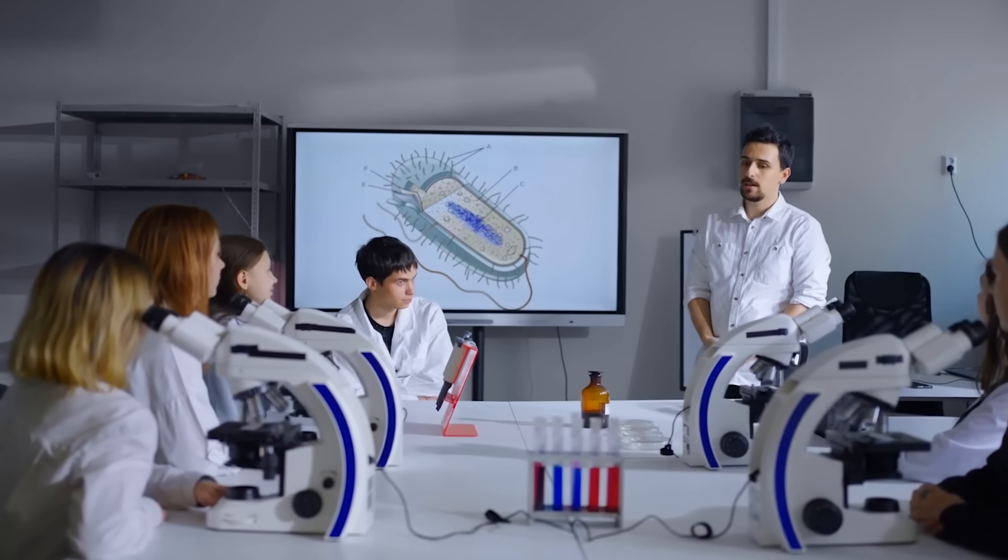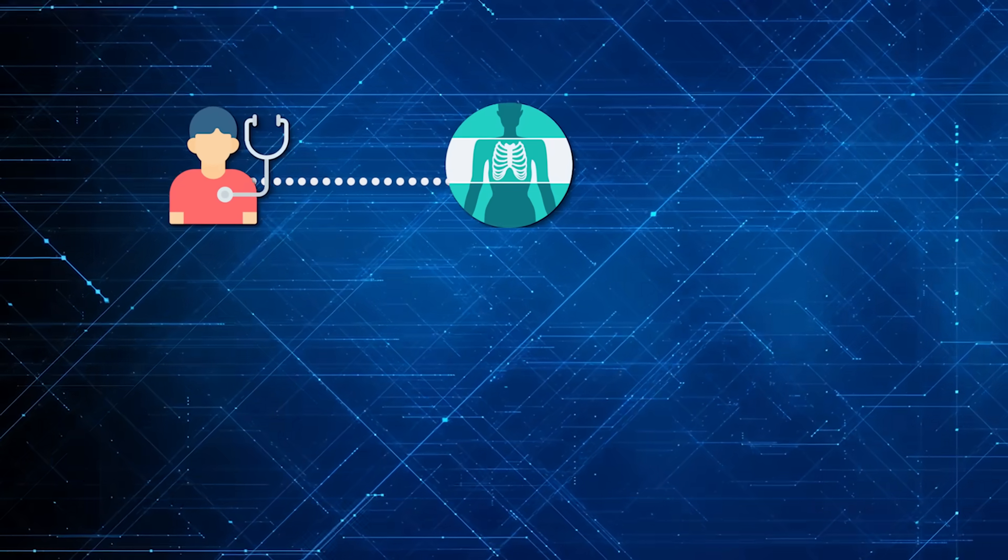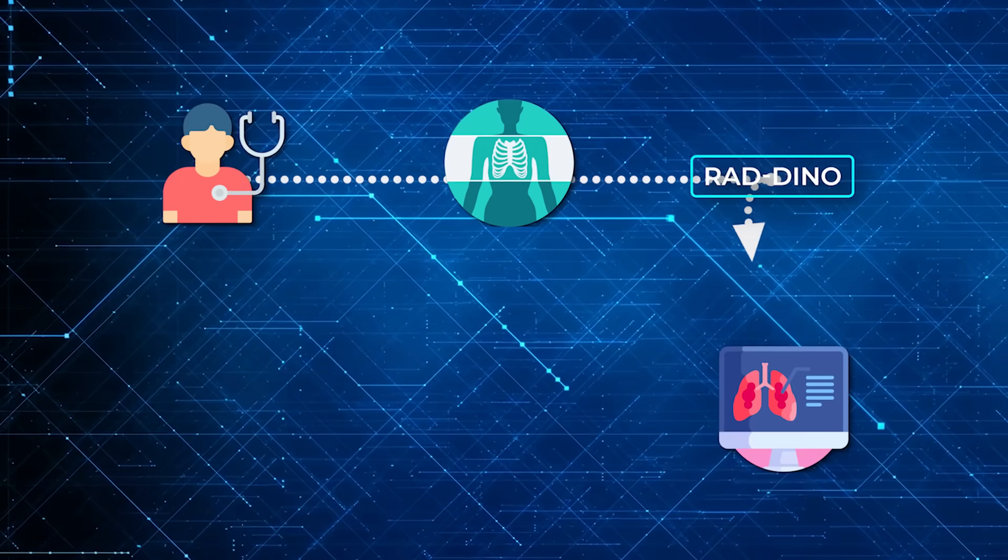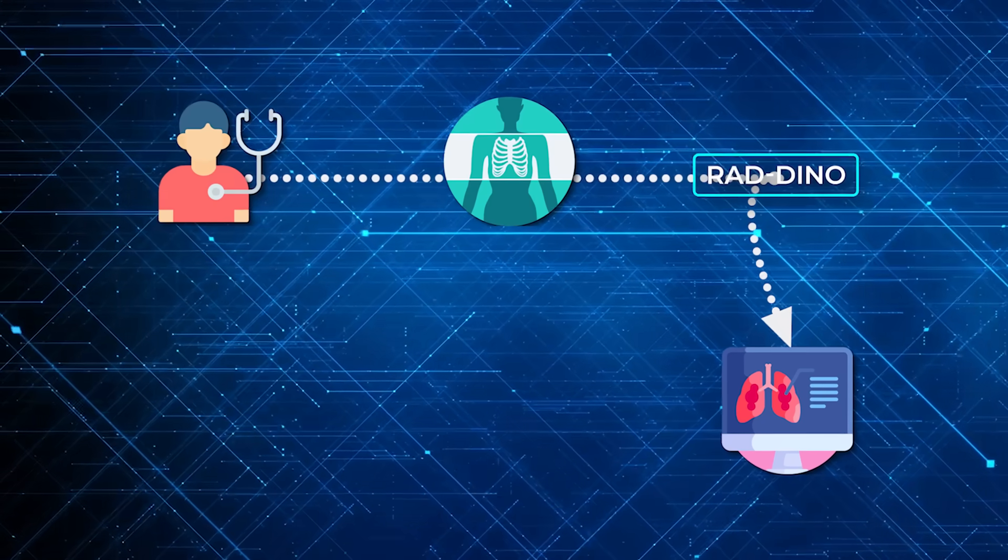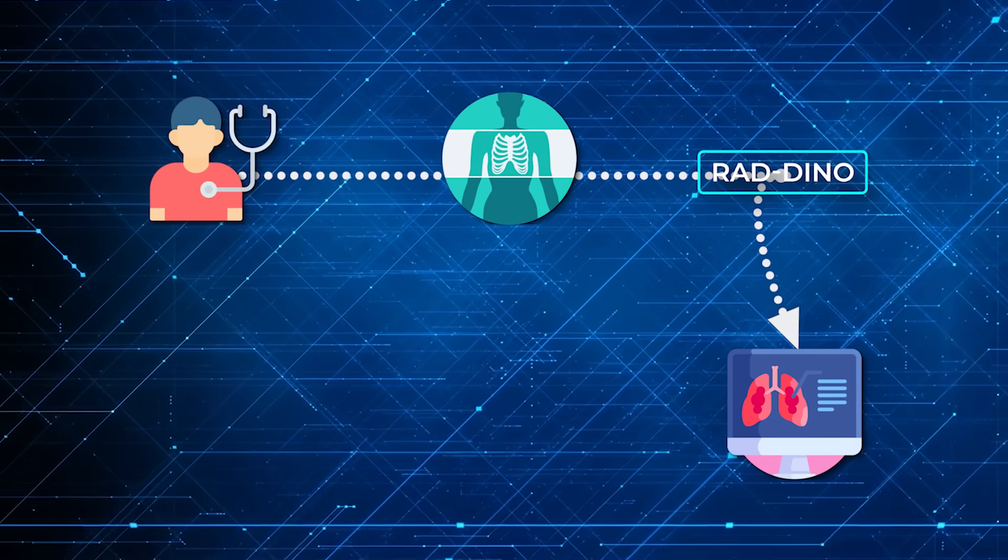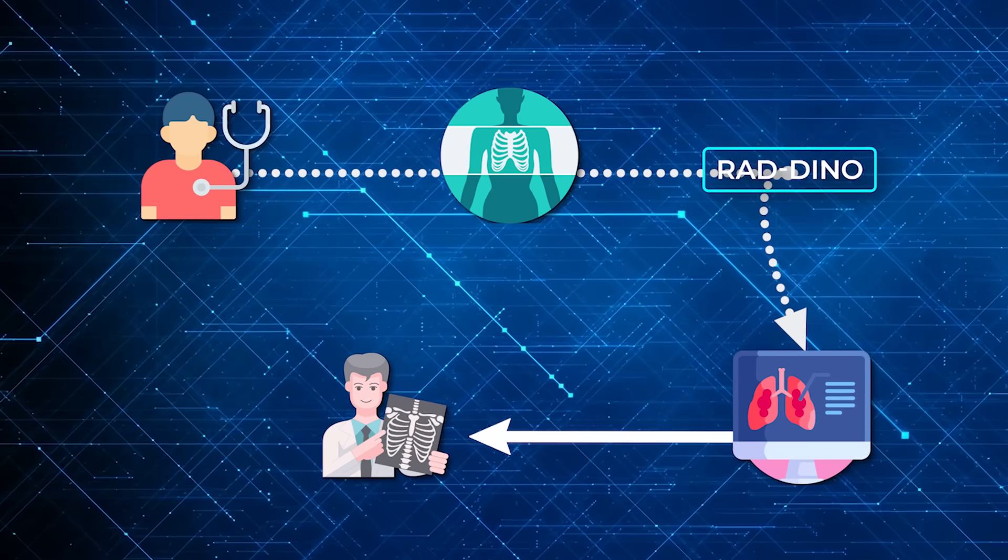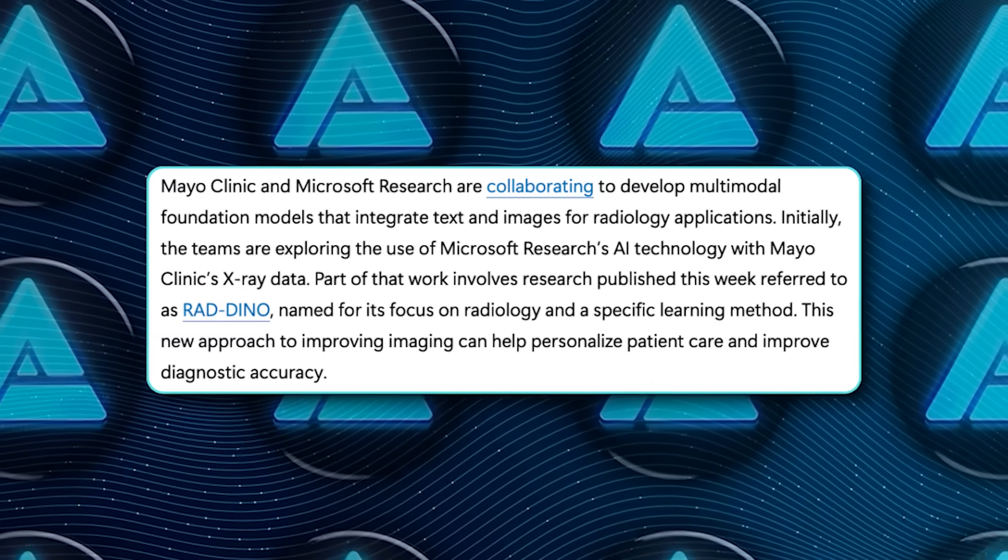Imagine how this could look in a hospital workflow. A new patient comes in, gets an X-ray, the image is fed into RAD-Dino, and within minutes the system flags potential issues, such as a catheter that's incorrectly positioned, or an unnoticed anomaly from a previous scan. Physicians get a concise summary and can decide on the best course of action without hours of manual analysis.